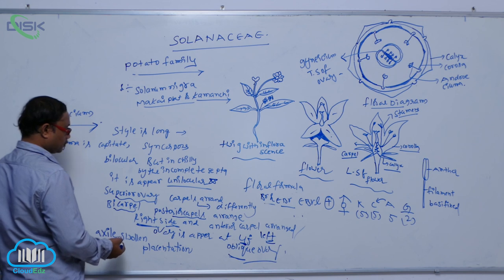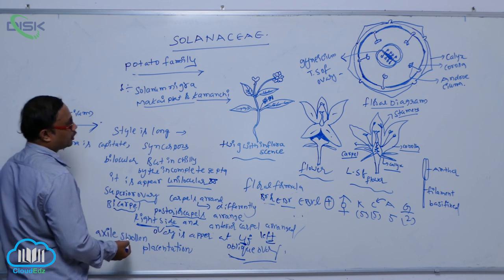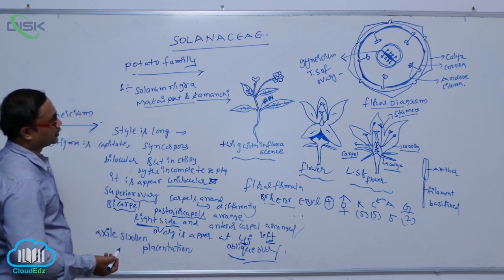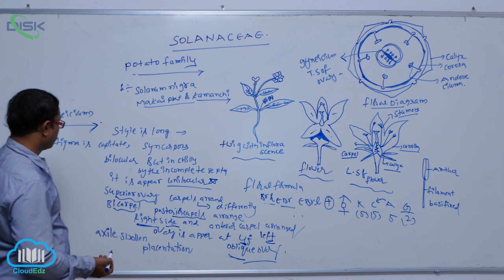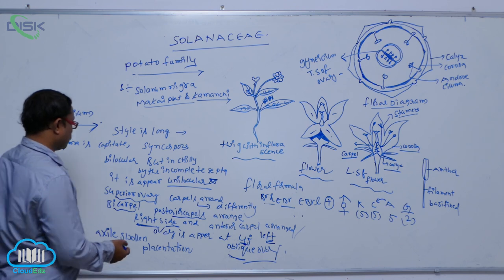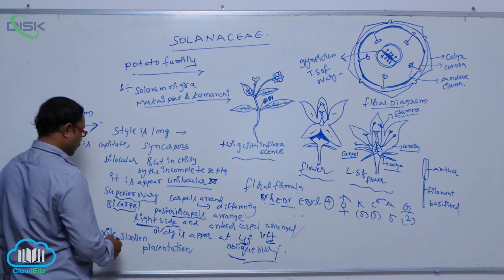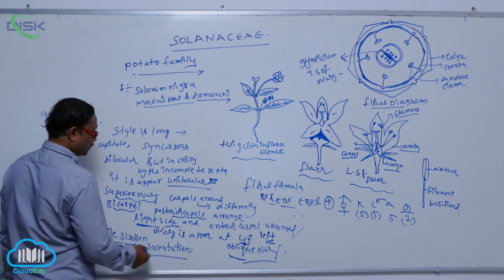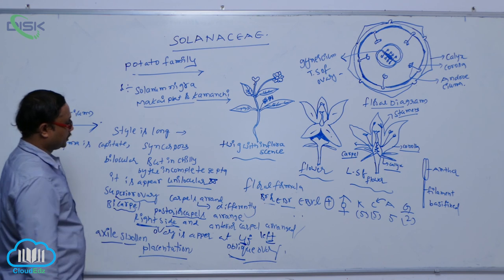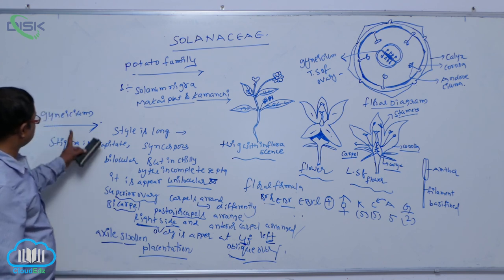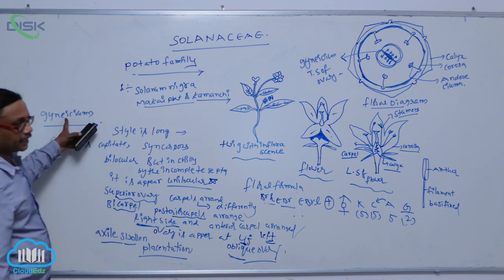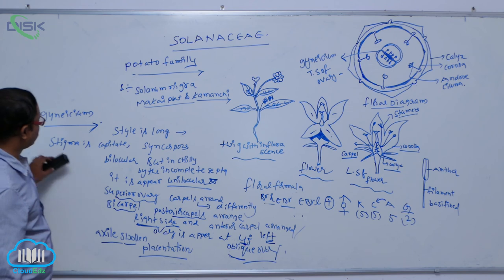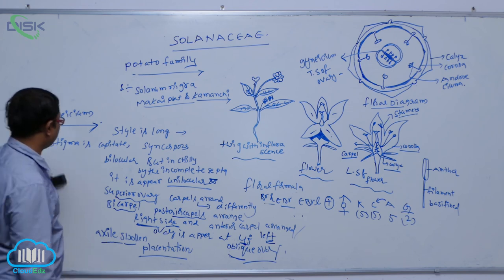In this one, the placenta is formed at the center and the ovaries are attached at it. The placenta is swollen — that is known as axial swollen placentation. So, these are the gynoecium characters of the Solanaceae family.